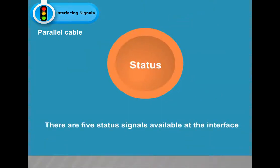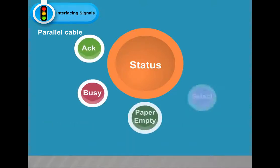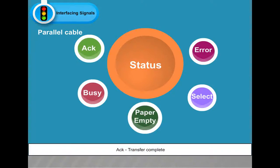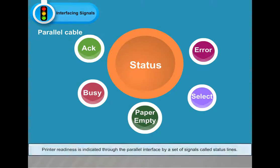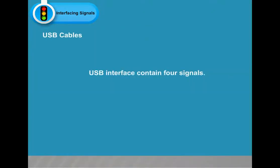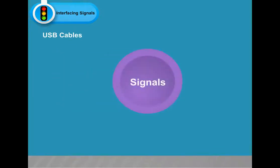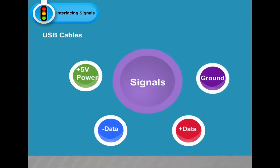Status: there are five status signals — ACK (Transfer Complete), BC (Printer Busy), Paper Empty (Paper Not Available), Select (Printer Select), and Error (Error Detected). Printer readiness is indicated through the parallel interface by a set of signals called status lines. USB interface contains four signals: Positive 5V Power, Negative Data, Positive Data, and Ground.